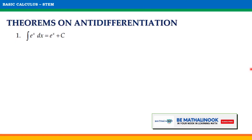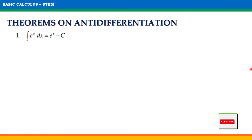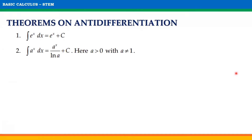These are the theorems for anti-differentiation of exponential and logarithmic functions. For the first one, the indefinite integral of e raised to x with respect to x is equal to e raised to x plus the arbitrary constant c. For the second theorem, the indefinite integral of a raised to x with respect to x is equal to a raised to x divided by ln a plus c. Note that a should be greater than 0 and it should not be equal to 1.